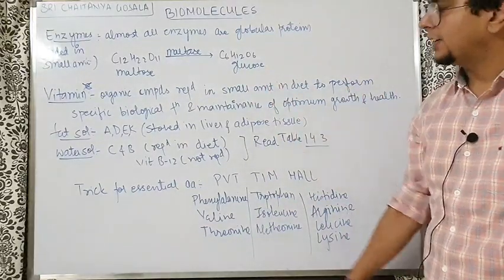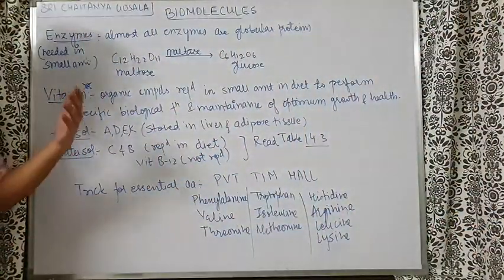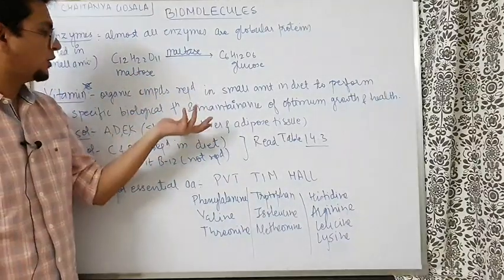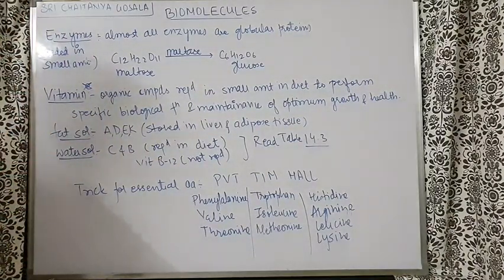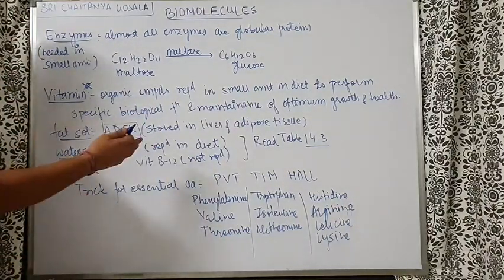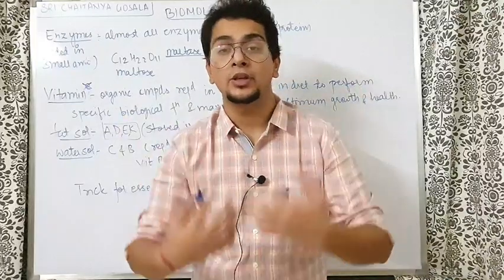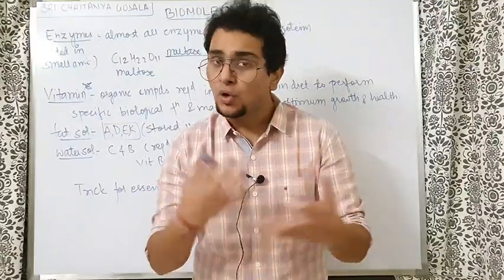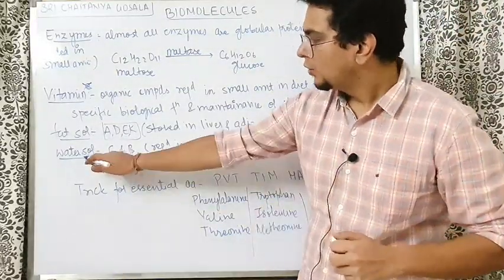Vitamins are organic compounds required in small amounts in the diet to perform specific biological functions and for the maintenance of optimum growth and health of the organism. There are two kinds of vitamins: fat-soluble and water-soluble. ADEK are the fat-soluble vitamins — they are not soluble in water but soluble in fat. When you eat these vitamins, they are not excreted in urine; instead, ADEK remain in the body, solubilized in the liver or in the adipose tissue, which stores fat.